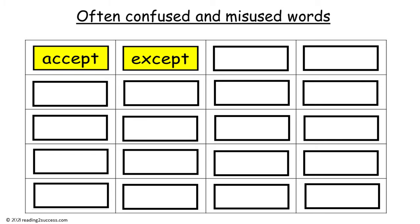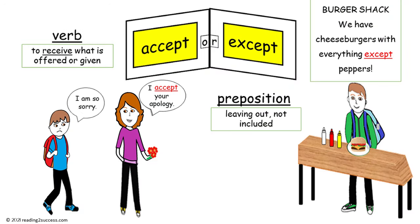Our first pair is accept and except. Accept, spelled A-C-C-E-P-T, is a verb and it means to receive what is offered or given. In this example, the boy offers an apology saying 'I am so sorry,' and the teacher receives it saying 'I accept your apology.' The word except, spelled E-X-C-E-P-T, is a preposition meaning leaving out or not included. According to the burger shack sign, we have cheeseburgers with everything except peppers — peppers were not included.